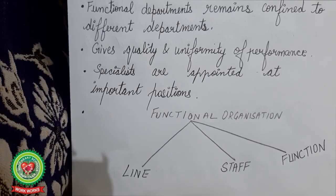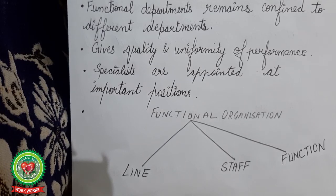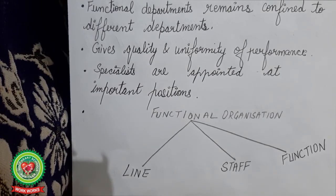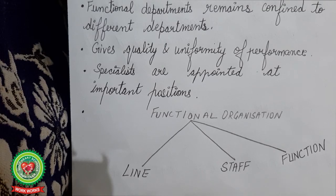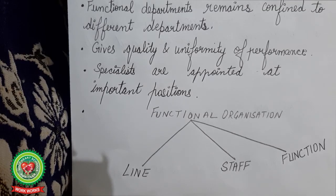The topic of functional organization is not yet over. We still have to cover line, staff, and function in detail, and we will start with an important part — functional foremanship — including types of specialists, merits, demerits, and suitability, in tomorrow's lecture. Thank you all.